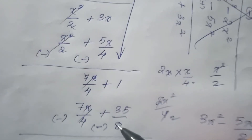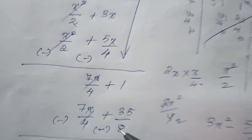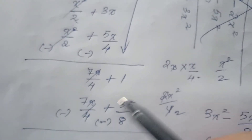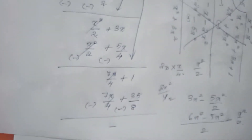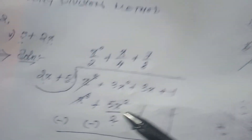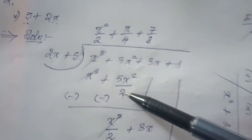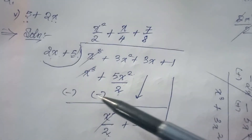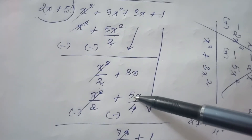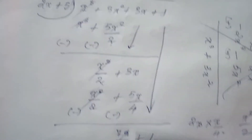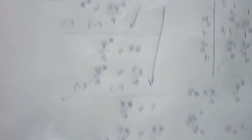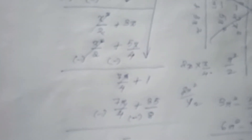Fraction is equal to 81. 81 is equal to 35. 8216 is equal to 0. So the answer is minus. 35 by 81 is equal to 0. The answer is minus.